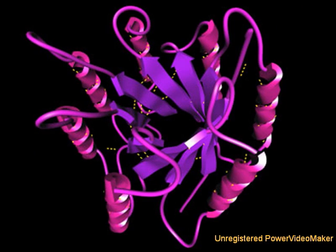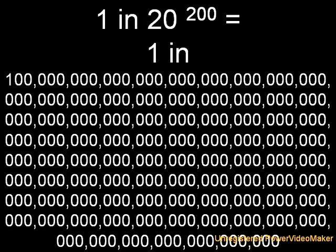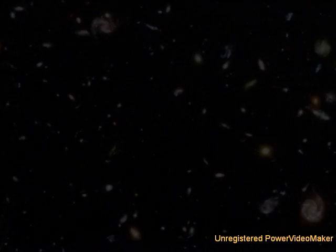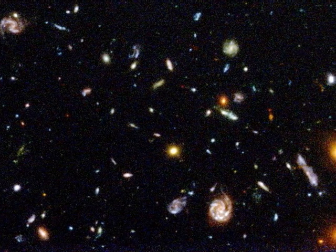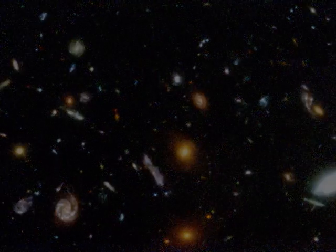You may have heard the argument that genes cannot form by chance. Take for example a protein that is 200 amino acids long. Since there are 20 different amino acids, the chance of such a protein forming by chance is 20 to the 200th power, or roughly 1 in 1 followed by 260 zeros. To say that such an occurrence is unlikely is putting it mildly — it's more likely for two people to randomly pick the same subatomic particle in the entire visible universe than have such a protein form by chance.